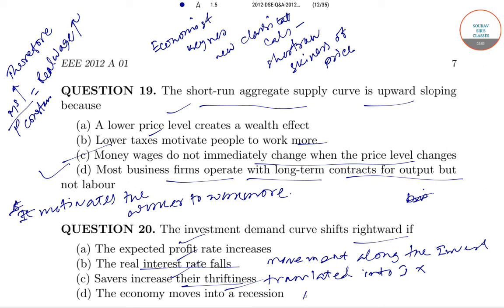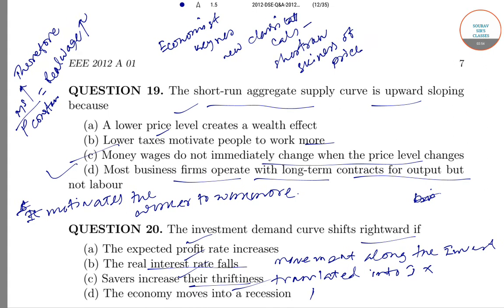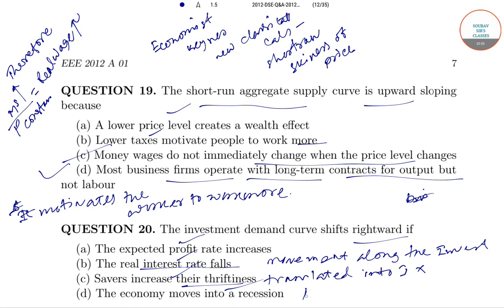There will be a lack of aggregate demand, so investment cannot increase — in fact, investment will fall. So surely, when the expected profit rises, the investment demand curve will shift, and this is the correct answer.